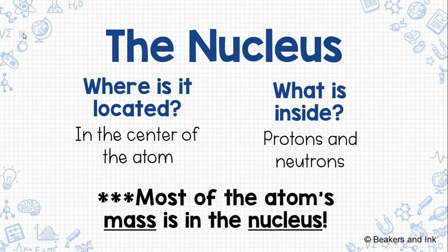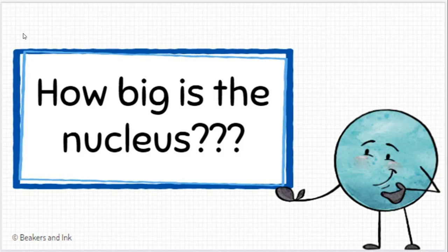So we've said that we have a nucleus, and inside the nucleus we would find the protons and the neutrons. The nucleus is located in the center of the atom. The nucleus is where most of the atom's mass is. So when we take a second to think about the nucleus, it's very, very small.